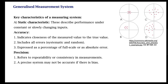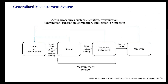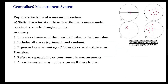Welcome to this course on biomedical instrumentation. We were looking at the blocks of a generalized measurement system. Now let's look at some of the key characteristics of a measurement system. There are two major types: static characteristics and dynamic characteristics. A static characteristic describes performance under constant inputs or slowly changing inputs — what is slow and what is fast depends on the application.